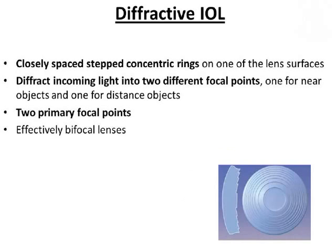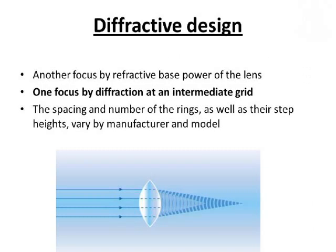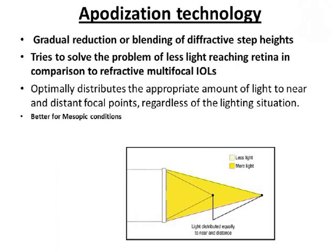The second type is diffractive IOLs, which have closely spaced stepped concentrics on either the anterior or the posterior surface of the intraocular lens. They divide the incoming light into two different focal points — one for distance and another for near — making them essentially bifocal lenses. However, some manufacturers say they also provide focus for intermediate distances. The problem of less light reaching the retina in diffractive IOLs is being addressed by apodized imaging technology, which involves a gradual reduction or blending of the diffractive steps.